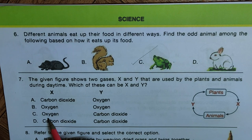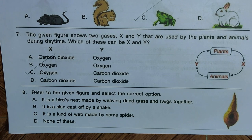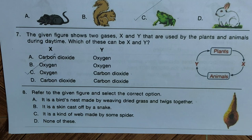Question eight: refer to the given figure and select the correct option. The options are: A — it is a bird's nest made by weaving dried grass and twigs together; B — it is a skin cast off by a snake; C — it is a kind of web made by a spider; D — none of these. Option A is correct — this is a bird's nest made by weaving dried grass and twigs together.